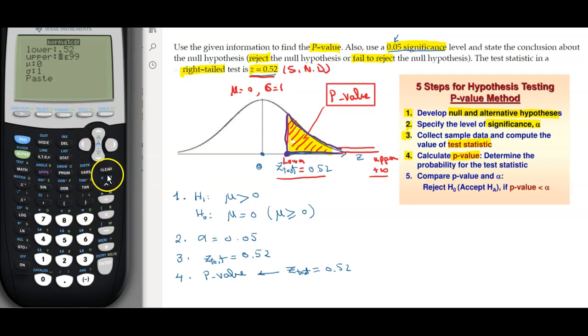The upper end, you're going to plug in one and then second comma to get the E, and then 99. That's basically 10 to the exponent 99. And then the mean is zero, sigma can be one. You paste it, enter, and the value you're going to get, the p-value here, is equal to 0.3015.